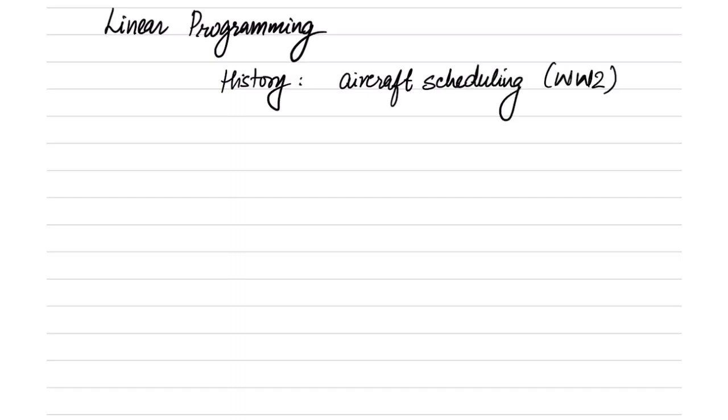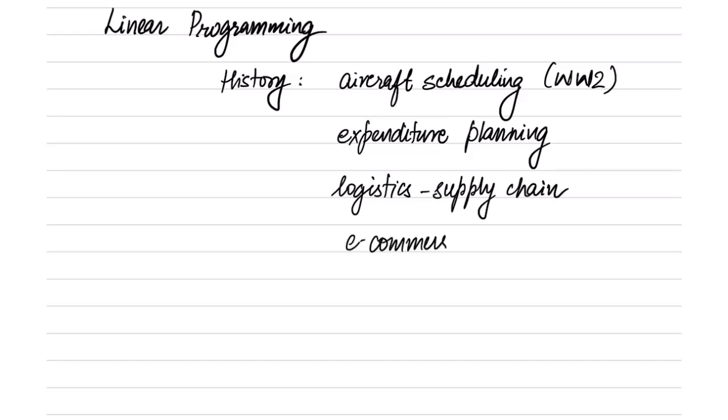Since then it has been used in a myriad of different areas. For example, expenditure planning and logistics supply chain, e-commerce. All of these industries frequently use linear programming.